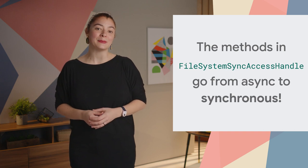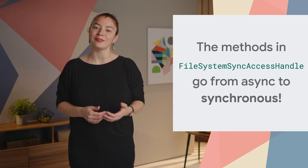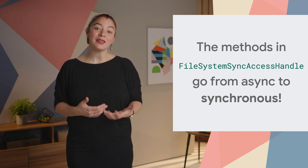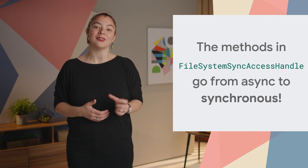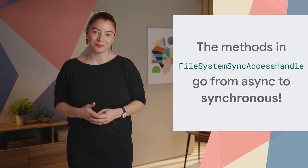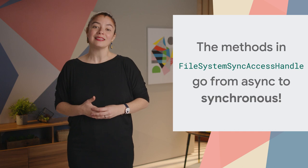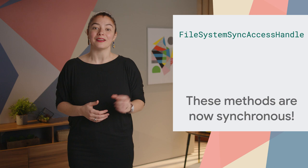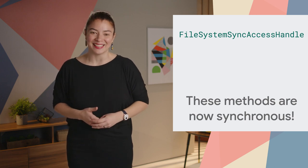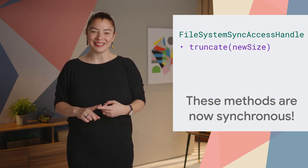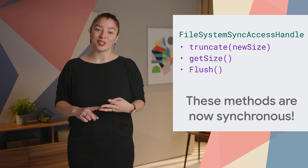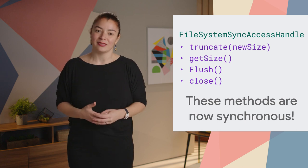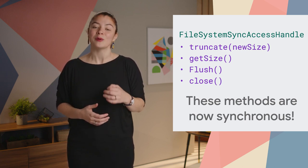The Origin Private File System provides access to a special kind of file that is highly optimized for performance. Developers can get access to such files by calling createSyncAccessHandle, which is a method exposed on FileSystemFileHandle objects. This call results in a FileSystemSyncAccessHandle, and the methods truncate, getSize, flush, and close in that access handle used to be asynchronous.